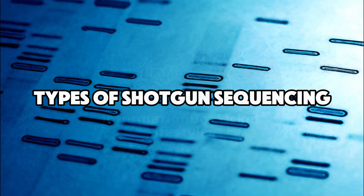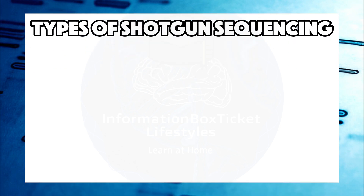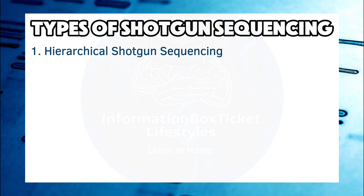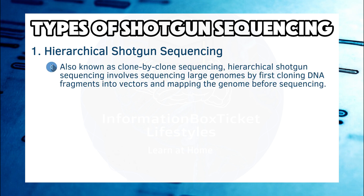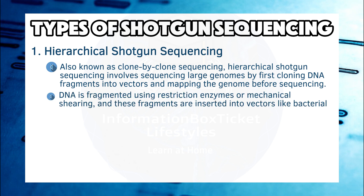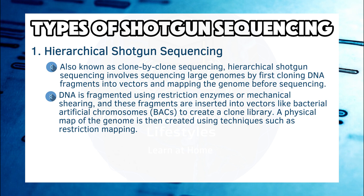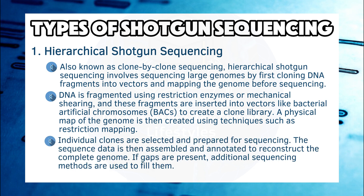There are two primary methods of shotgun sequencing. First, hierarchical shotgun sequencing, also known as clone-by-clone sequencing, involves sequencing large genomes by first cloning DNA fragments into vectors and mapping the genome before sequencing. DNA is fragmented using restriction enzymes or mechanical shearing, and these fragments are inserted into vectors like bacterial artificial chromosomes (BACs) to create a clone library. A physical map of the genome is then created using techniques such as restriction mapping. Individual clones are selected and prepared for sequencing, and the sequence data is then assembled and annotated to reconstruct the complete genome.